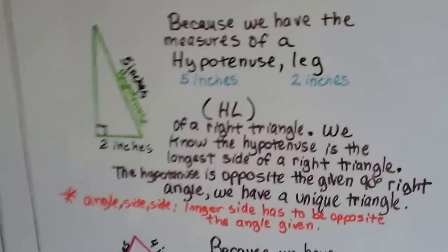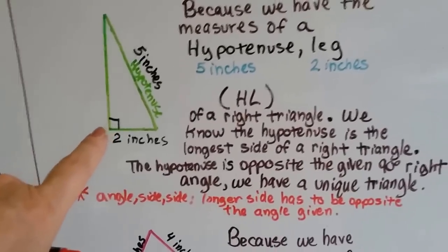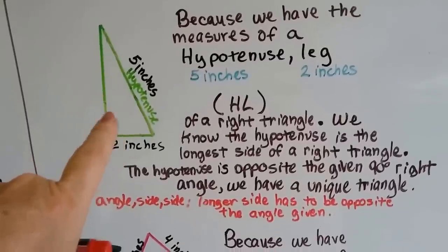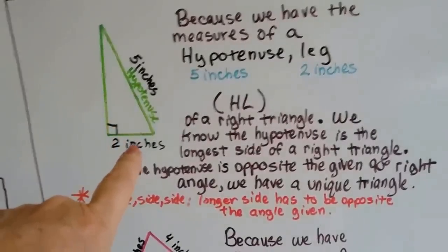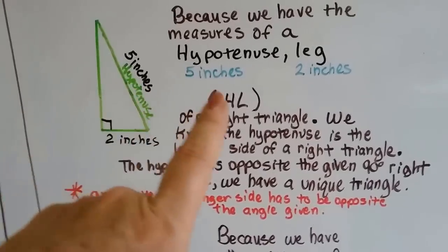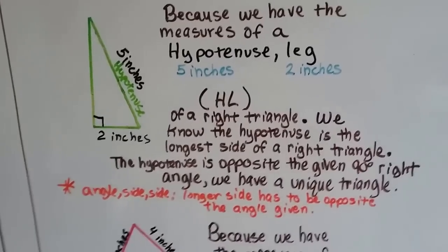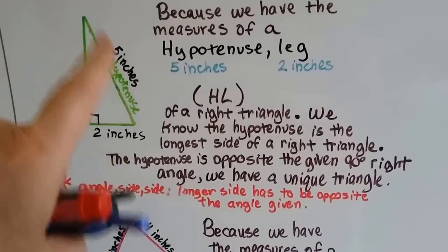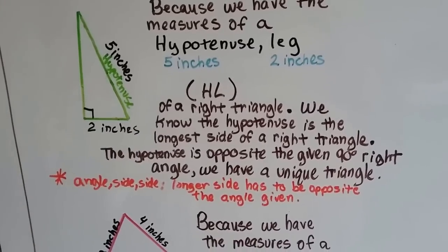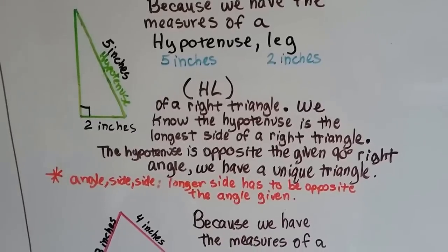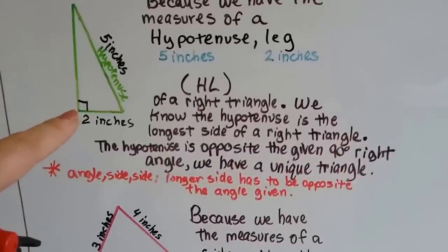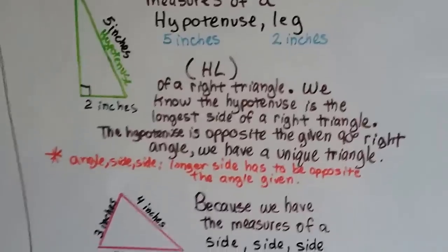Here we have a right triangle, so we know that angle is 90 degrees. We have an angle, then a two-inch side and a five-inch hypotenuse — angle, side, side. We call this hypotenuse-leg because we have the measures of the hypotenuse (five inches) and the leg (two inches) of a right triangle. The hypotenuse is the longest side and is opposite the 90-degree angle, so we have a unique triangle.